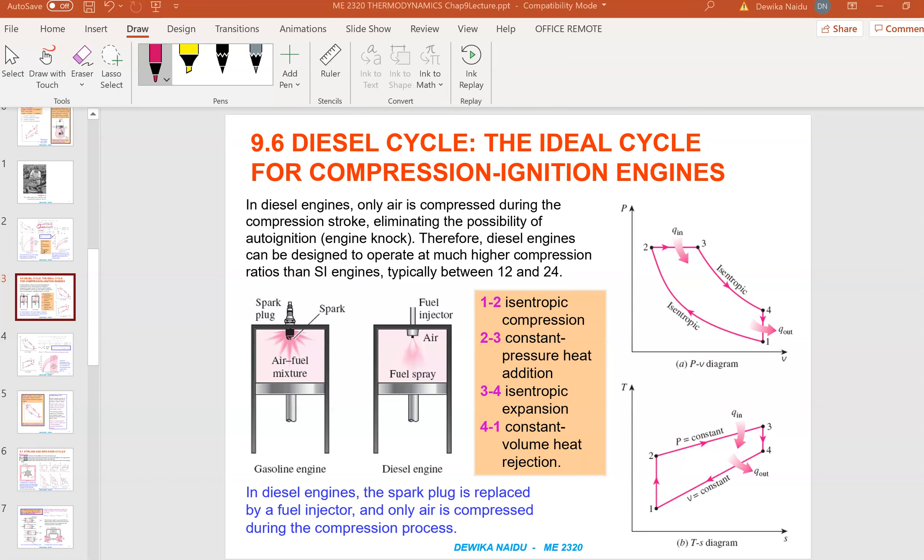In diesel engines, only air is compressed during the compression stroke. Earlier it was air and fuel, but this one only air is compressed, eliminating the possibility of auto ignition which is the engine knock itself. Therefore, diesel engines can be designed to operate at much higher compression ratios compared to the SI engines, typically between 12 to 24.